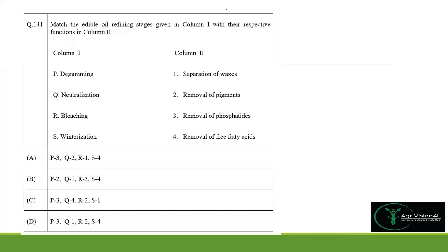Coming to question 141 — matching edible oil refining stages with their functions. This is a common GATE question. Degumming is the removal of phospholipids (phosphatides), so P matches option 3. Neutralization removes free fatty acids by mixing alkali, so Q matches option 4.